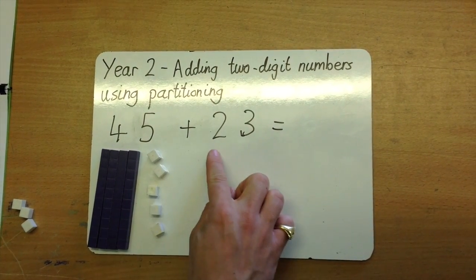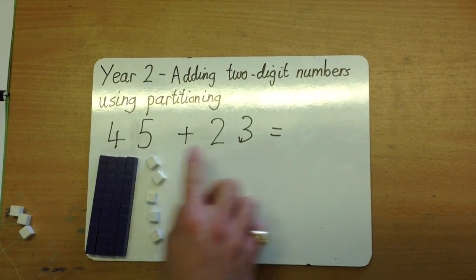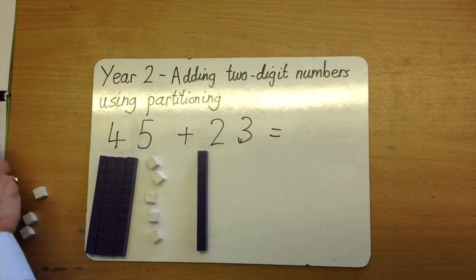We're adding 23. In 23, there are 2 tens. 1, 2.